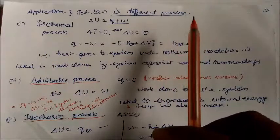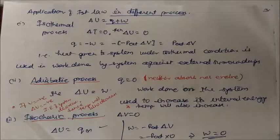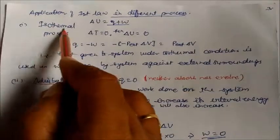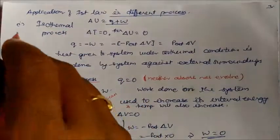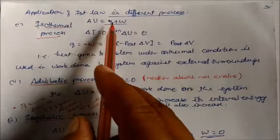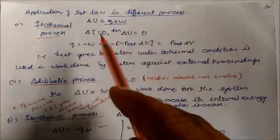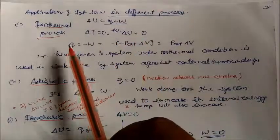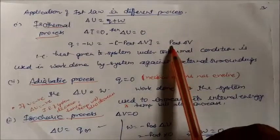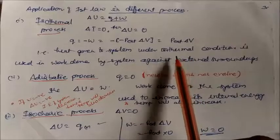Application of the First Law to different processes. In an isothermal process, temperature is constant, so ΔU = 0. From ΔU = q + w, we get q = −w = p_external × ΔV. This means heat given to the system under isothermal conditions is entirely used in work done by the system against external surroundings.